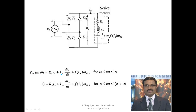During the positive half cycle when T1 D1 conduct, the input supply is available across the armature: Vm sin(ωt) = ia·Ra + La·(dia/dt) + e. Here e is not constant — it is a function of ia and ωm, written as f(ia, ωm). In the separately excited DC motor we would put a constant E, but here it is f(ia, ωm).